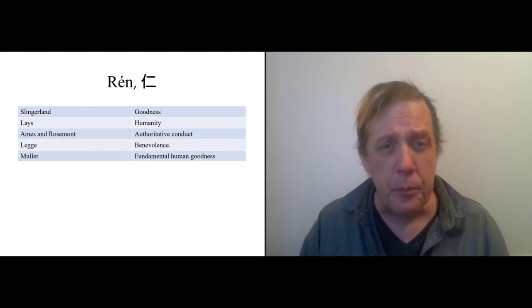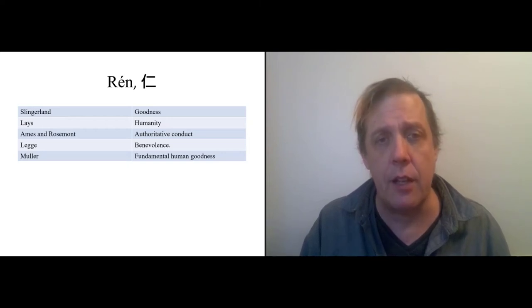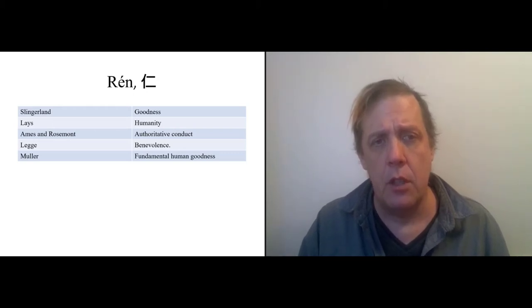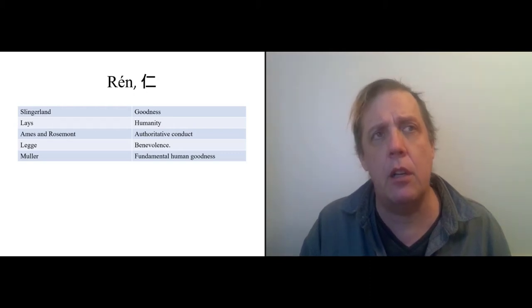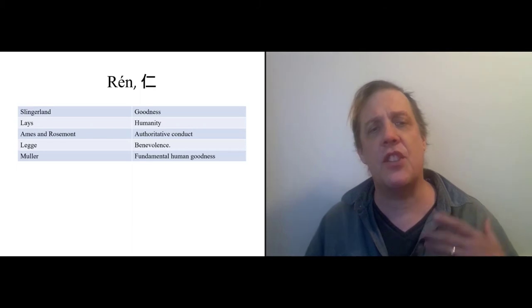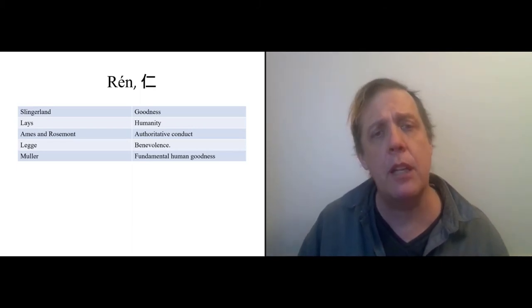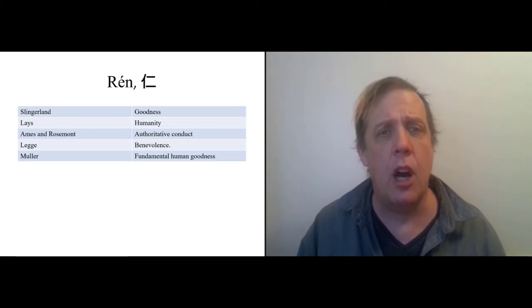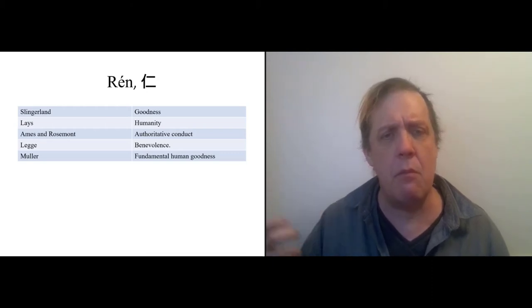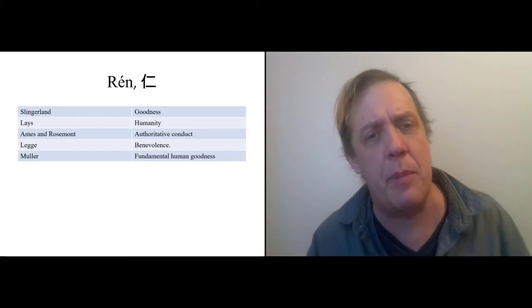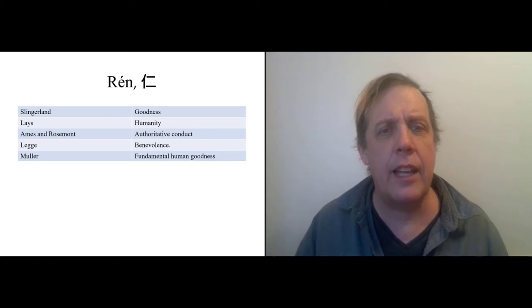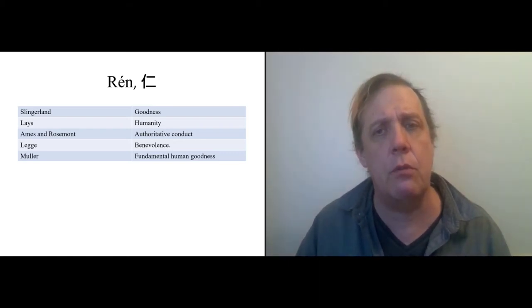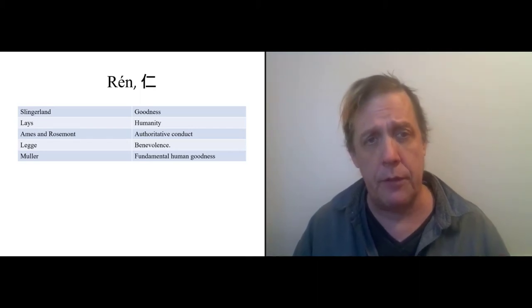So there's some other translators out there. A guy named Leys has a nice translation. He calls it humanity. And I can see that. Two famous translators, Ames and Rosemont, Ames is really trying to promote Confucian thought in America. And so whenever he translates things, he is trying to make it seem as appealing as possible in his mind to an American audience. So rather than talking about something that you might be associated more with like Imperial China, the phrase he uses is authoritative conduct. Legge uses benevolence, and that's closer to what Mencius means than what Confucius means. Mueller uses fundamental human goodness.